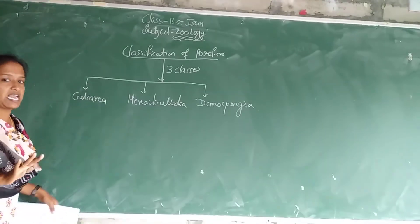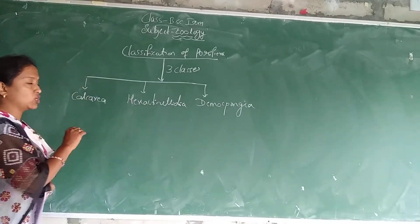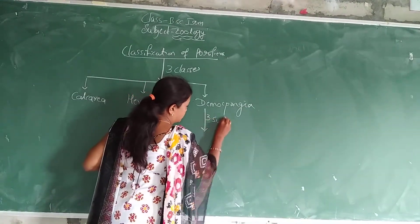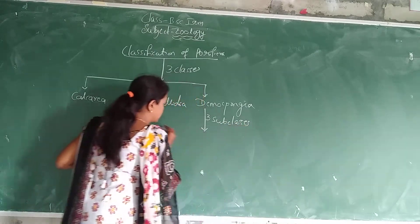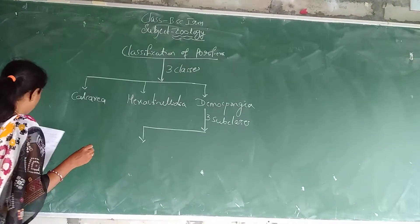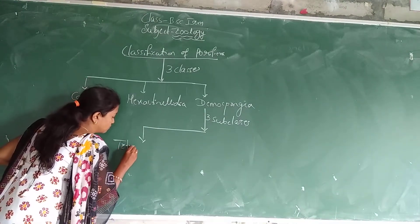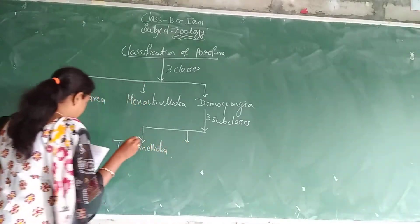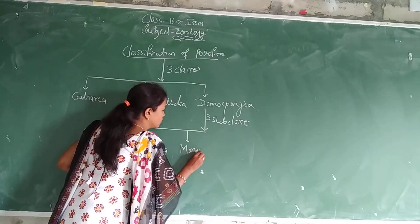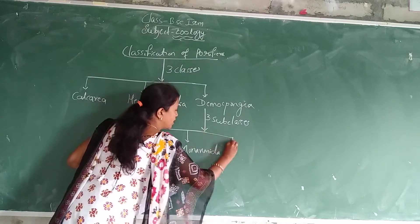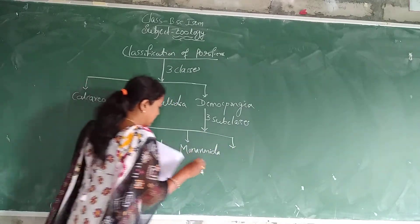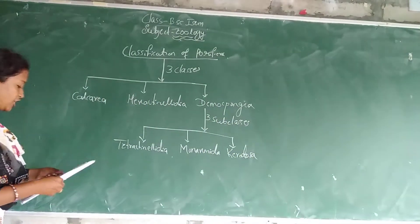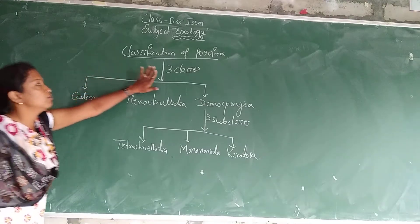Calcarea is not having any subclasses. Similarly, Hexactinellida is also not having any subclasses. But Demospongia is having three subclasses: one is Tetractinellida, second one is Monaxonida, and third one is Keratosa.